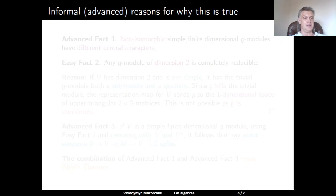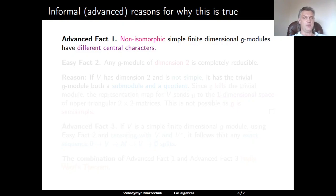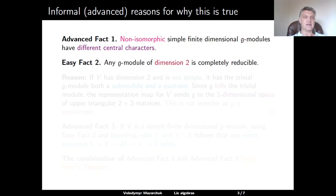Before giving a proof, we describe some general but a little bit advanced reasons for why this result is true. First of all, one can show that non-isomorphic simple finite-dimensional G-modules have different central characters. This can be shown using the theory of highest-weight G-modules. This means that the center of the universal enveloping algebra of G acts on non-isomorphic simple finite-dimensional G-modules in a different way, and so you cannot glue non-isomorphic simple finite-dimensional modules together to form an indecomposable module, because the action of the center splits them.